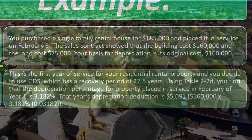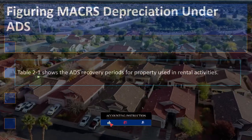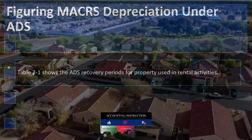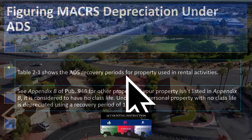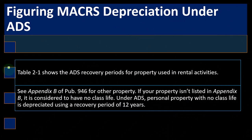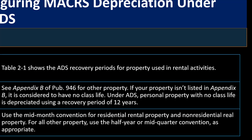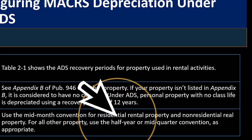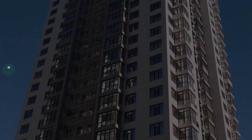Figuring MACRS depreciation under ADS: Table 2-1 shows the ADS recovery periods for property used in rental activities. See Appendix B of Publication 946 for other property. If your property isn't listed in Appendix B, it is considered to have no class life under ADS; personal property with no class life is depreciated using a recovery period of 12 years. Use the mid-month convention for residential rental property and non-residential real property; for all other property use the half-year and mid-quarter convention as appropriate.